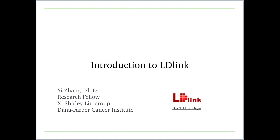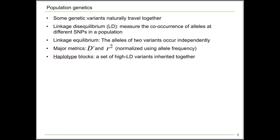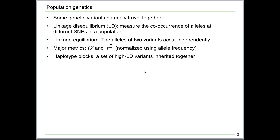Before we dive into the web tool, let's get familiar with some concepts in population genetics. Humans have millions of natural genetic variants, or SNPs, and the occurrence of them are not independent. That is, some genetic variants naturally travel together. To measure the co-occurrence of alleles at different SNPs in a population, the concept of linkage disequilibrium is defined when alleles of a pair of SNPs couple with each other.